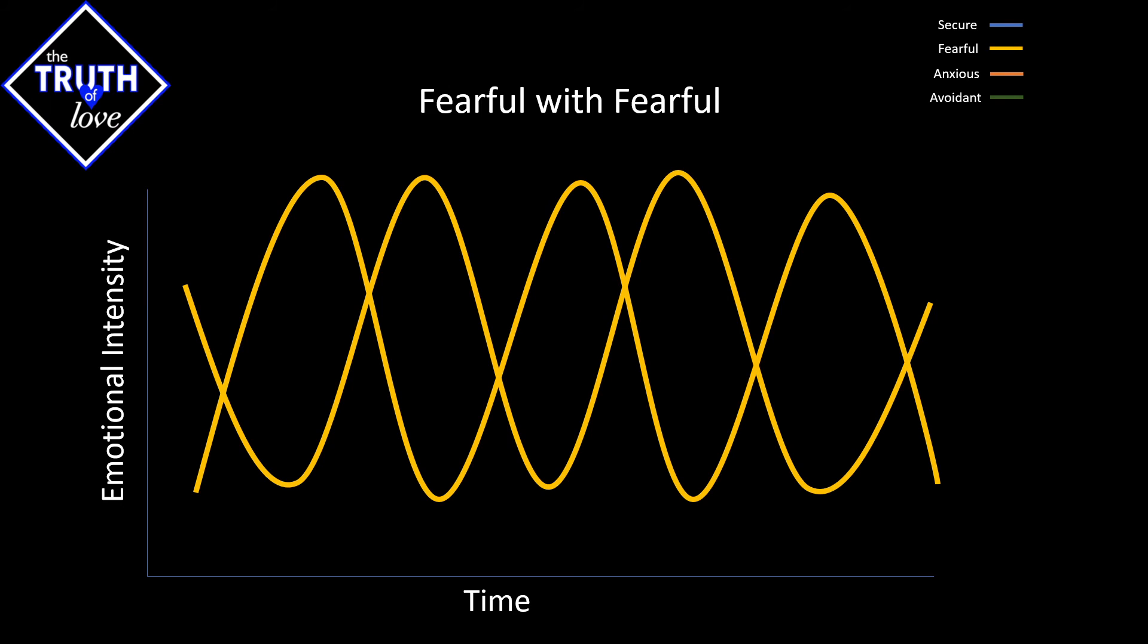When do breakups happen when two fearfuls are connected or together in a relationship? More than likely, some kind of intense trauma that throws off this wave balance. So all of a sudden, the person that should be feeling a high is feeling a low, and they're both feeling low, and they all of a sudden can't recover from it and they turn into a spiral. This is where you get aspects of emotional cheating, for example, or relationships ending abruptly without explanation.